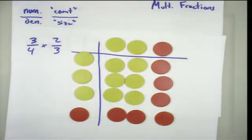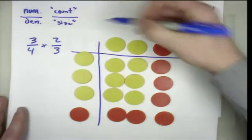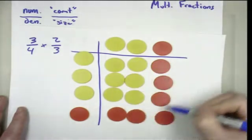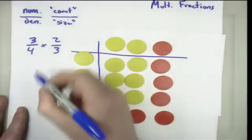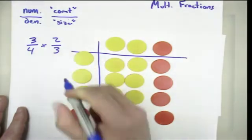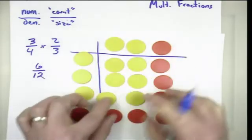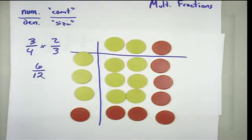That would give us six. So if we look at our product here, we see a count of six out of a size of 12. So we know when we multiply three-fourths times two-thirds, that's going to give us six-twelfths, not six times 12.